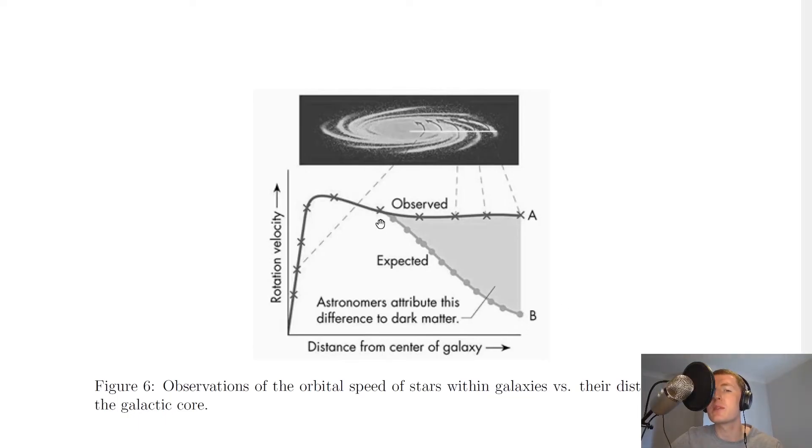However, what is actually observed is more of a sort of levelling off in the rotational velocity of the stars, which is what this line here is showing. So there's therefore a big difference in the orbital speeds and astronomers attribute this difference to dark matter.